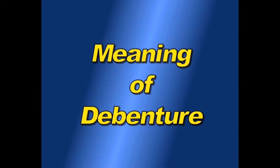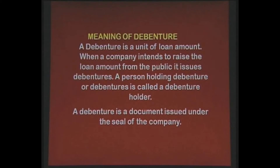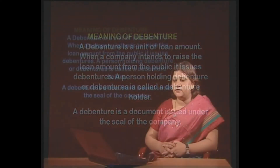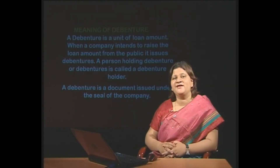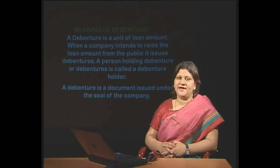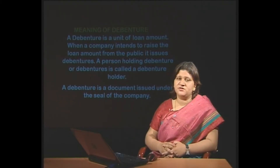Today we will learn how debenture is being defined and what are the various types of debentures. A debenture is a unit of loan amount. When a company intends to raise the loan amount from the public, it issues debentures. A person holding a debenture is called a debenture holder. A debenture is a document issued under the seal of the company. Where a company's intention is to take a loan not from any financial institution or banking sector, but from the public, what the public expects by giving such money to the company is interest. Such persons who have taken up the debentures are known as debenture holders. We can say debenture is a document which is issued under the common seal of the company.